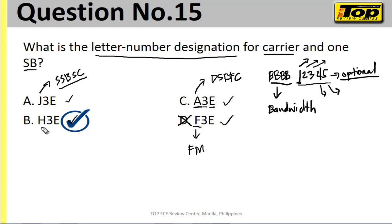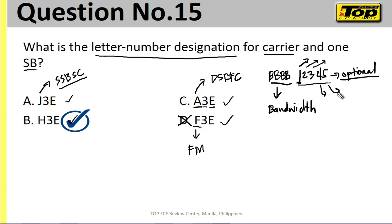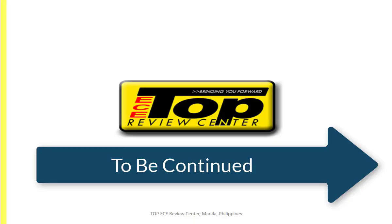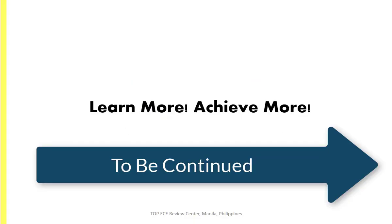Regarding the '3' character: it means one channel containing analog information, while E indicates telephony or mono-oral broadcasting. There is a full video available that covers the ITU emission designation system in detail — it's too lengthy to cover completely here. That is question number 15.